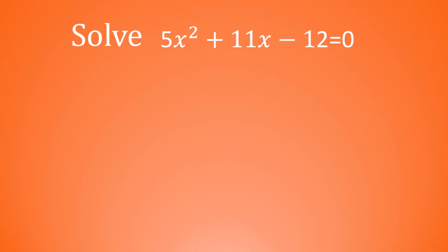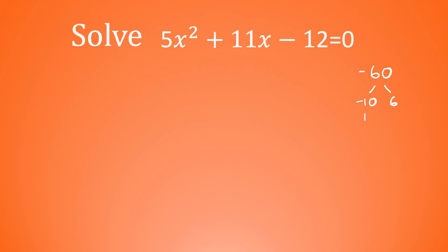Solve 5x squared add 11x minus 12 is equal to 0. We've got more than one lot of x squared here — we've got 5x squared. So we use a slightly different technique. We take the number on the end, in this case negative 12, and multiply it by the coefficient of x squared, in this case 5. So negative 12 times 5 is negative 60. Now we look for the factors of negative 60 that also add to 11. I can see that 15 times 4 is 60, and 15 take away 4 makes 11. So that's our pair of numbers: 15 and negative 4.